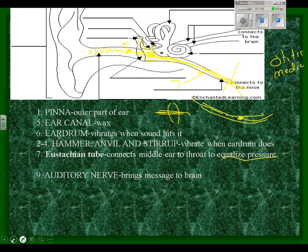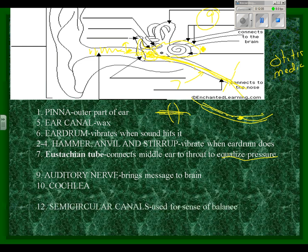Number nine is the auditory nerve, and it brings the message to the brain. What we have to talk about is what actually the message is, and that message comes from number ten, this snail-shaped organ here called the cochlea. The other thing you see on this slide are these things up here, which I'm going to label number twelve. These guys, the semicircular canals, which actually, as far as we can tell, have no use in hearing at all. But they are used for your sense of balance. So we'll be talking about the semicircular canals a little bit later on.